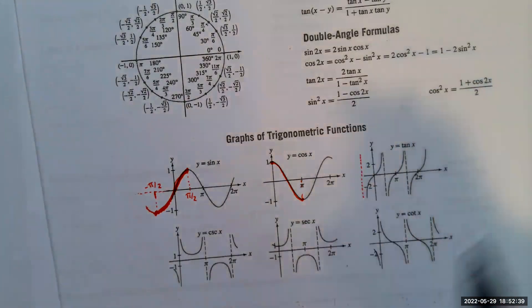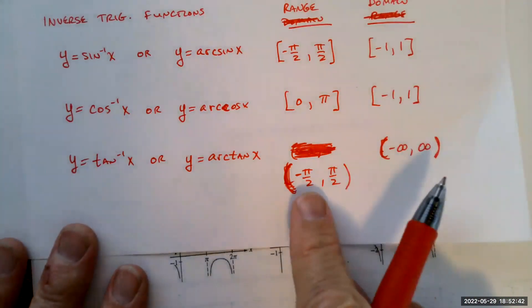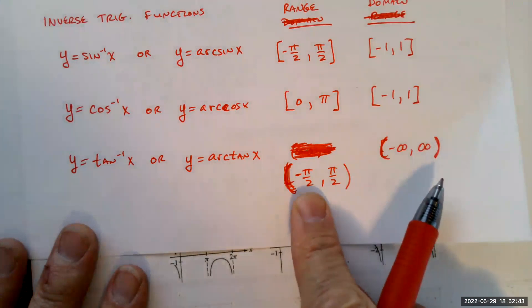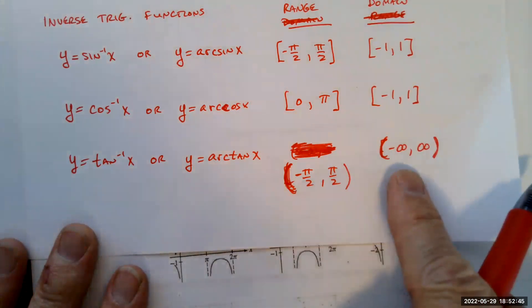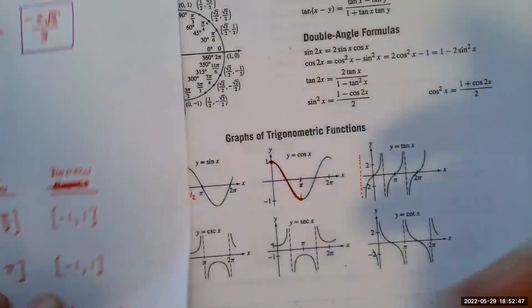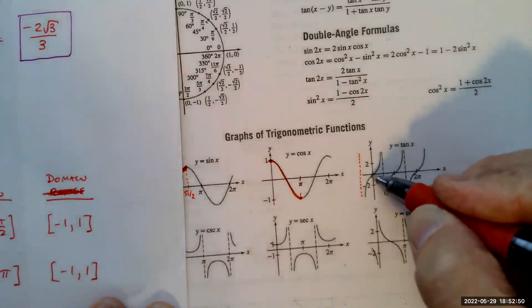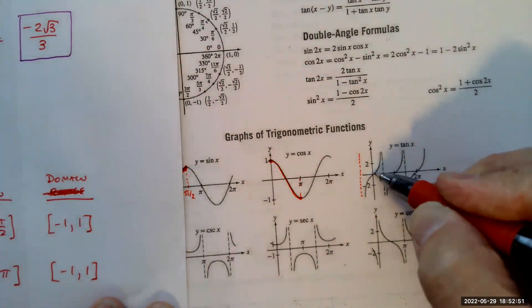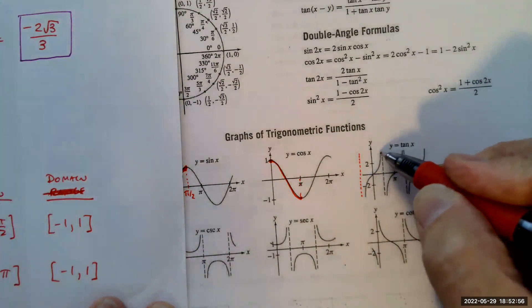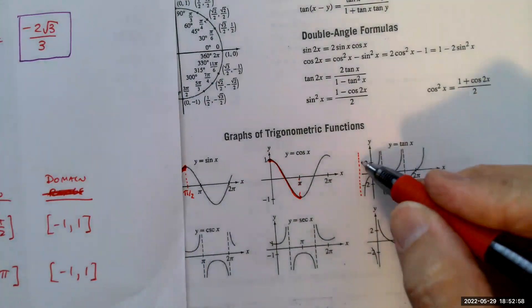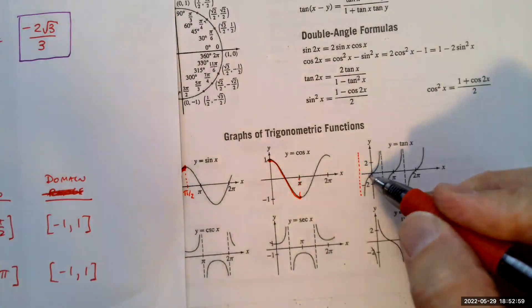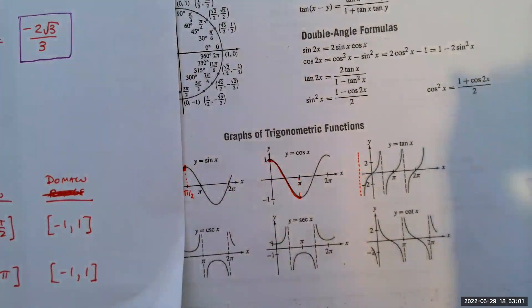For the inverse tangent function, we restrict between negative π/2 and π/2 — there are vertical asymptotes at those locations. That interval is the range of the inverse tangent, and its domain is all real numbers, since the range of the tangent function is all real numbers.